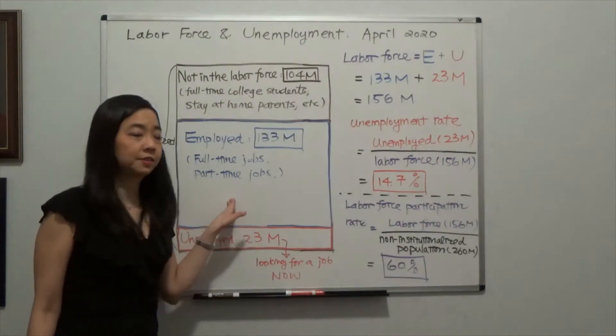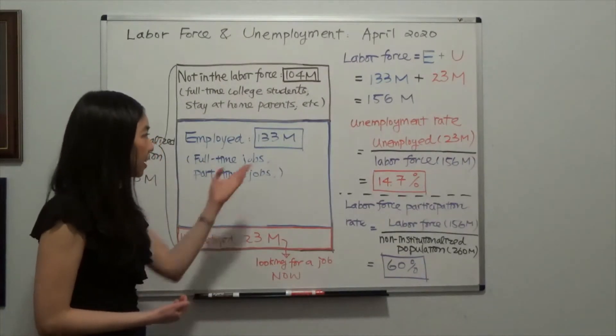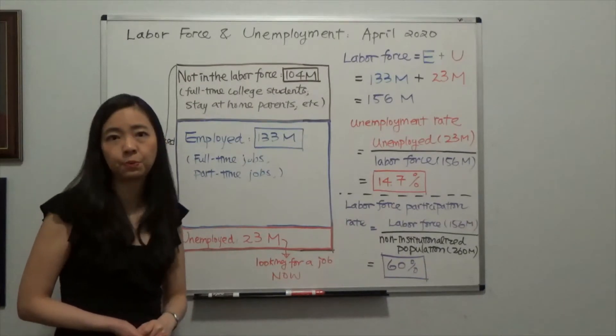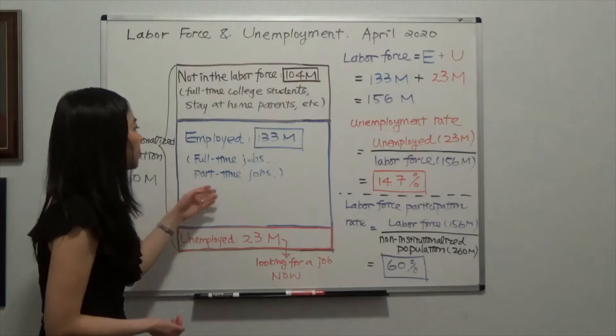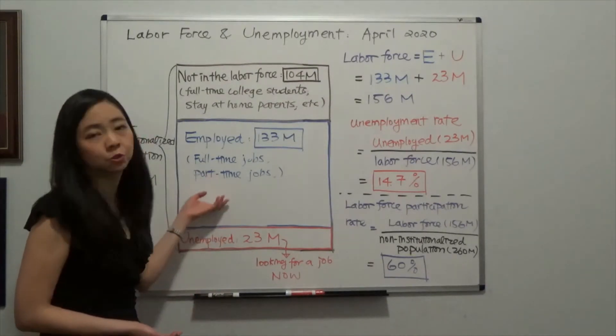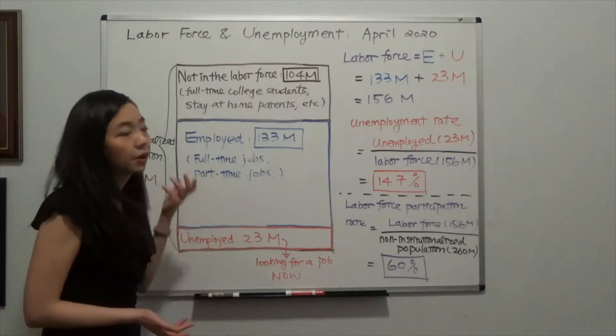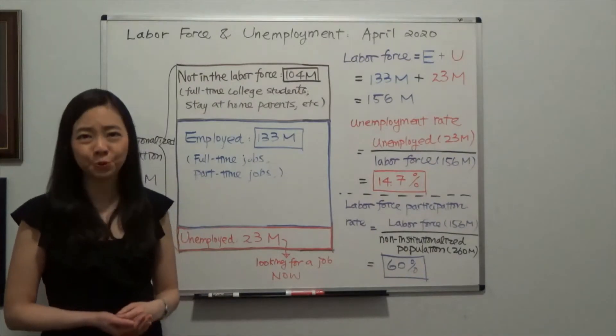Next is employed. There are 133 million people who are employed in April in the United States. If you have a part-time job or a full-time job, just any kind of job, if you are working, then you're counted as employed.